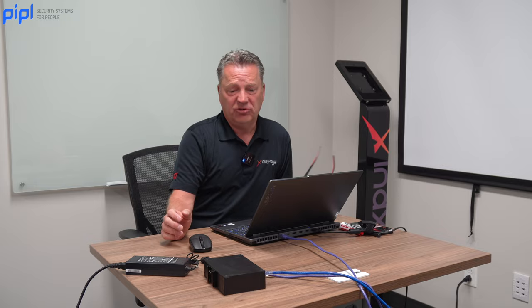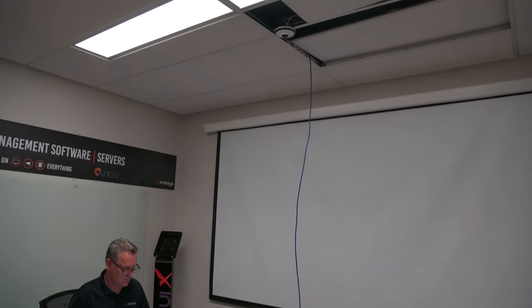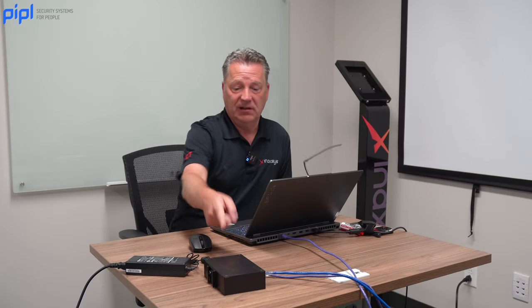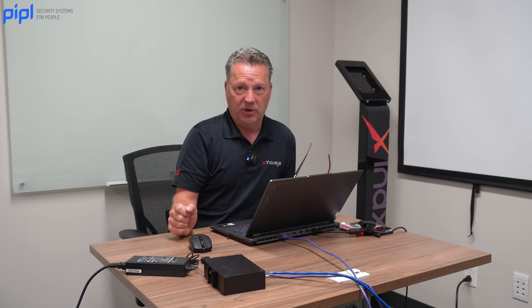I have a setup here which includes a camera that has been temporarily installed on the ceiling of our training room. I have a little PoE switch. I've connected my laptop to the small PoE switch and now I'd like to show you exactly what settings you would have if you were to connect inside the camera through the web page of the camera, the IP address of the camera, and then afterwards we're going to be using this camera in another video concerning our Archive video management software.